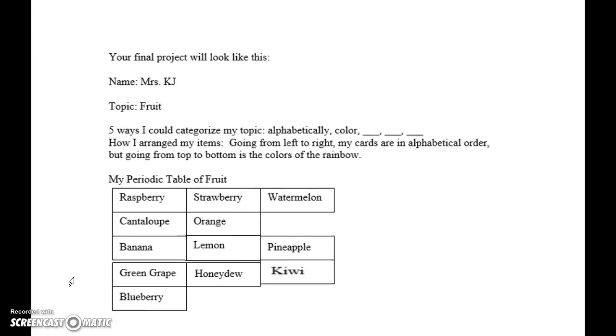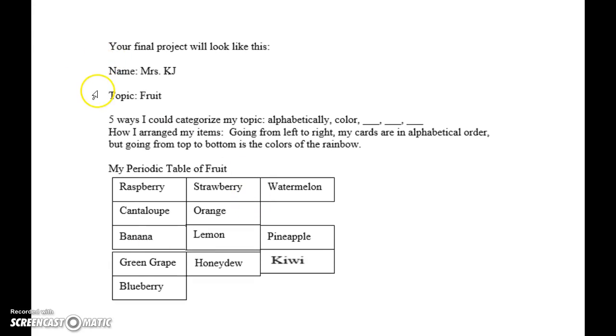So, your final project will look like this. Your name, your topic, five ways I can categorize my topic. Like, alphabetical, color, blah, blah, blah, except you need five that are different than mine. Then, tell me how I arranged my items. Going from left to right, my, I've said cards, because I used to do this in brick and mortar school. So, my items are in alphabetical order, but going from top to bottom is the color of the rainbow. And it's my periodic table of fruit.